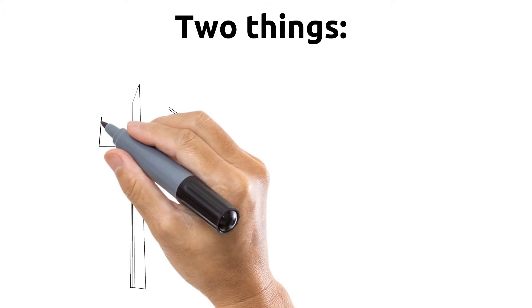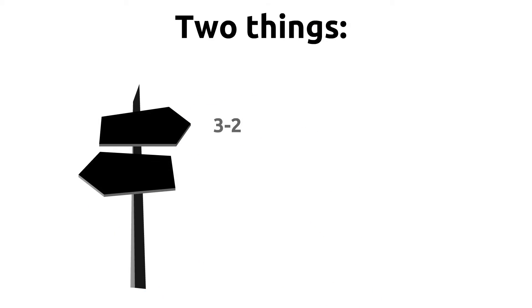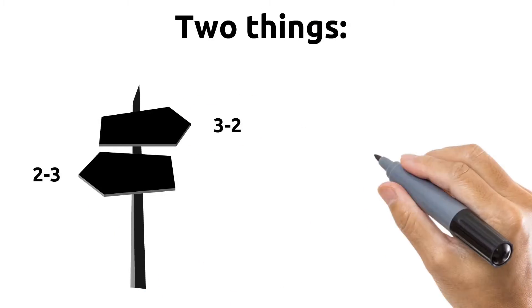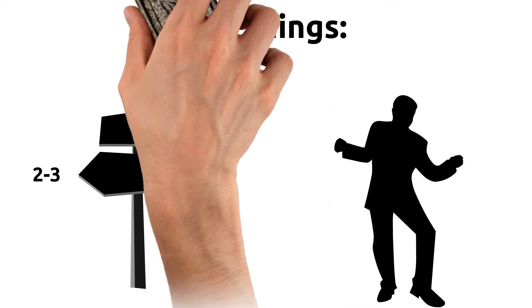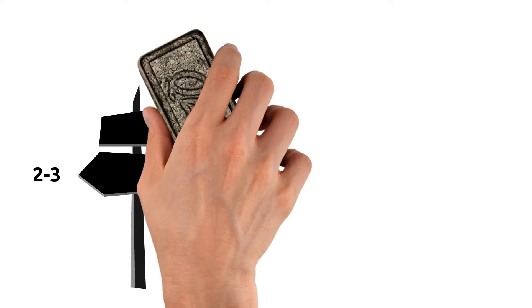First, that the bass tumbao always indicates the clave direction of a song. And second, that it should also determine which timing you dance with. So first, does the bass always indicate the clave direction like this?